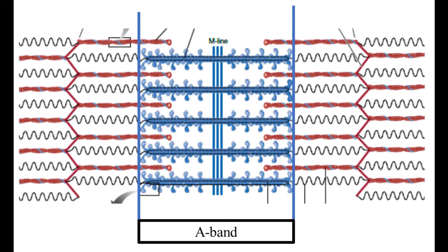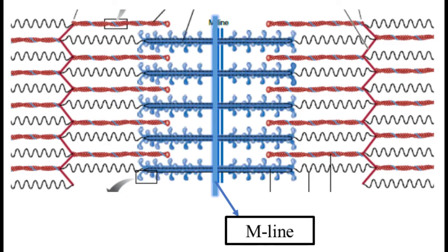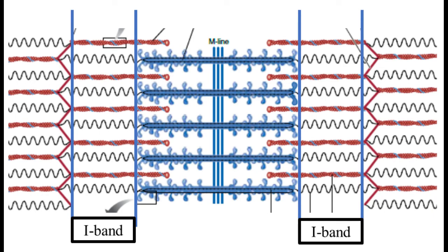Sarcomere has a unique striped appearance, i.e., it has alternating light and dark areas. These light and dark areas are because of dark and light bands found in the sarcomere. The A-band is formed by the entire length of the thick filaments and a small part of the thin filament. In the middle of the A-band, we only find dark or thick bands and hence we call it the H-zone. There is a dark line running through the middle of the H-zone known as the M-line. The H-zone and M-line are only visible when the sarcomere relaxes.